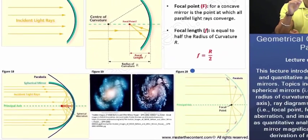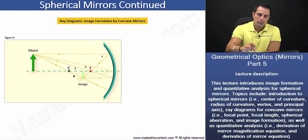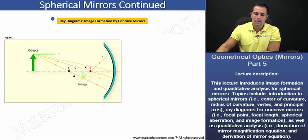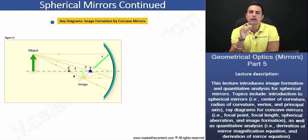Alright, let's now shift our attention towards image formation by concave mirrors. Now, on the previous slide, we had just learned that parallel rays close to the principal axis striking a concave mirror are going to reflect through the focal point.